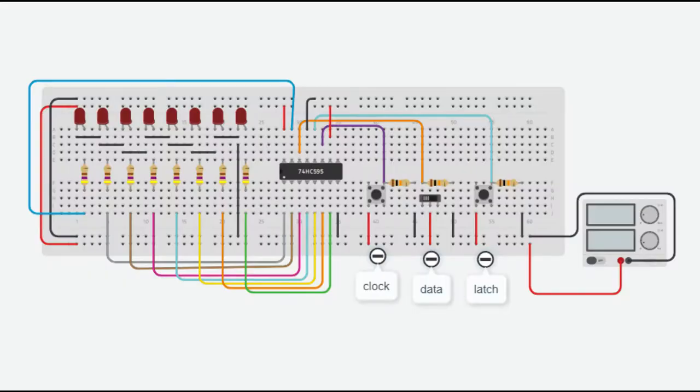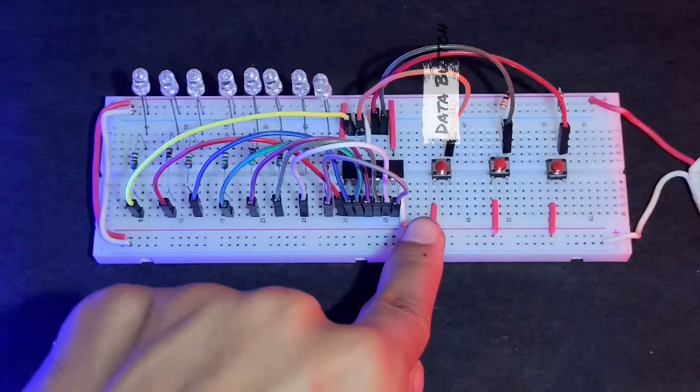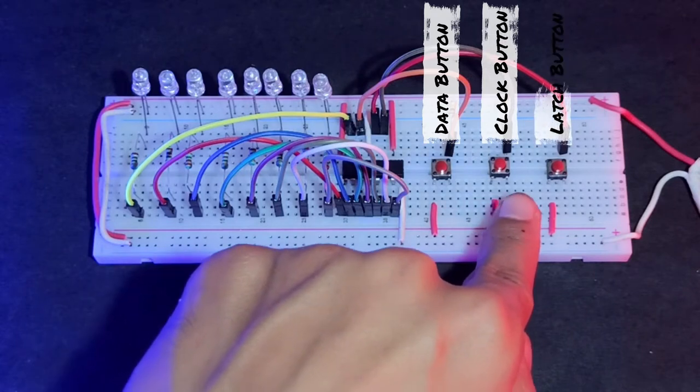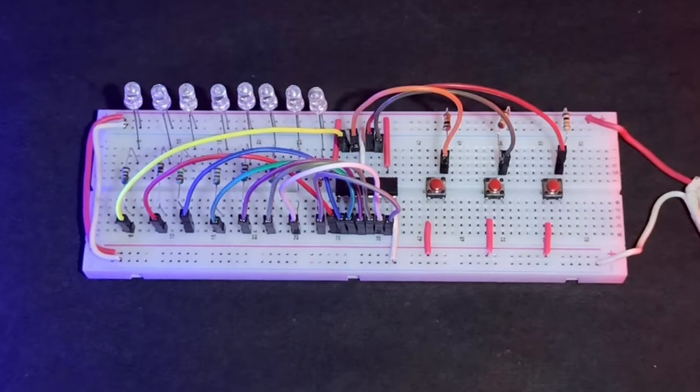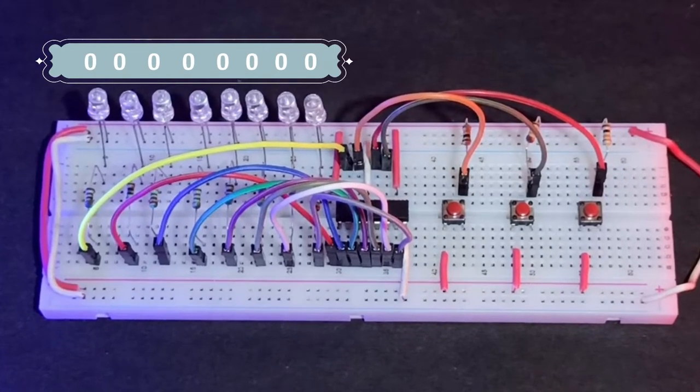Let's check how it works. There are three buttons. First is the data button. Second is the clock button. Third is the latch button. First of all, there is no bit stored in the chip register. Therefore, all LEDs are off.